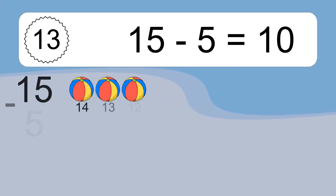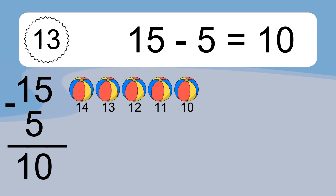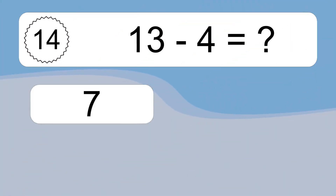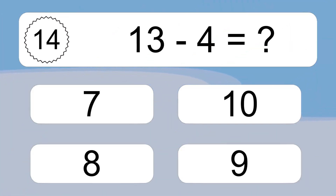15 minus 5 equals what? 15 minus 5 equals 10. Let's count it: 14, 13, 12, 11, 10. 13 minus 4 equals 9.